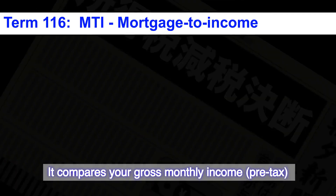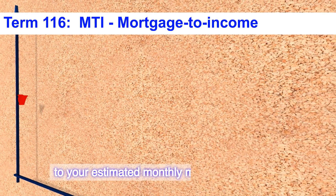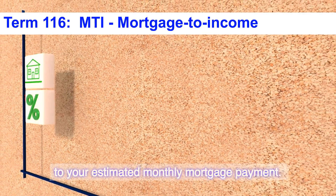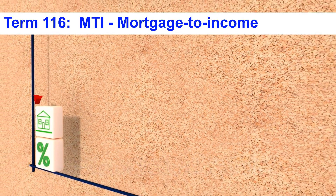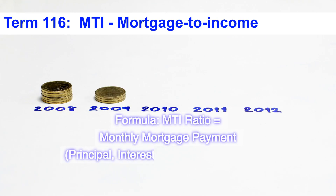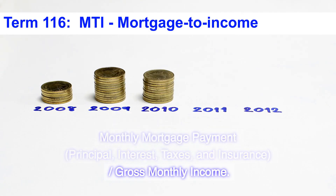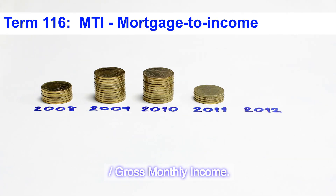It compares your gross monthly income, pre-tax, to your estimated monthly mortgage payment. Formula: MTI Ratio equals monthly mortgage payment — principal, interest, taxes, and insurance — divided by gross monthly income.